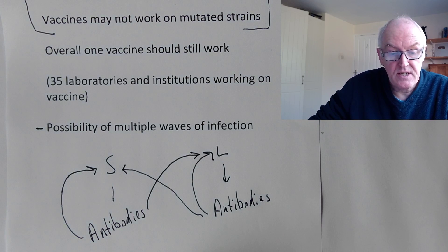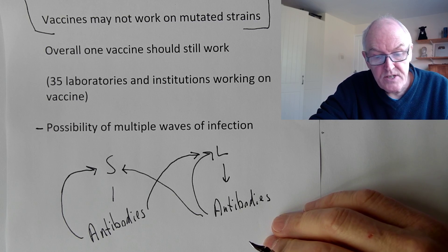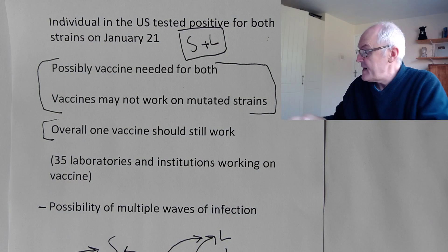There could also be waves of infection - a peak in a country, then it dies down, followed by another wave due to these two different forms. But the good news is we're really hoping one vaccine will work for both. It's also unclear whether being infected with both types at the same time causes more severe disease - that is currently unknown. To summarize: the COVID-19 RNA virus is generally described as relatively stable.